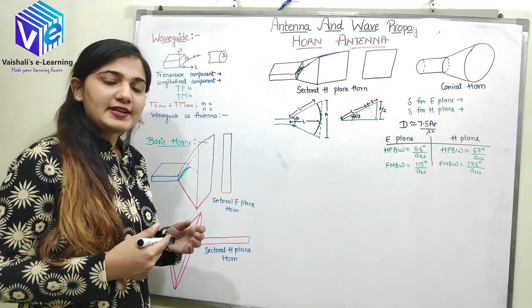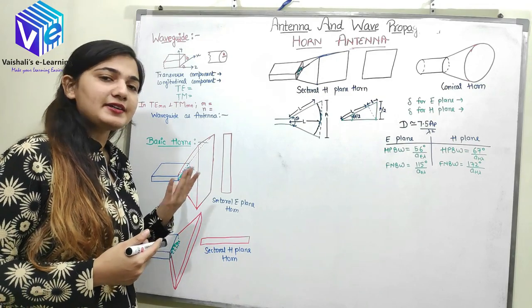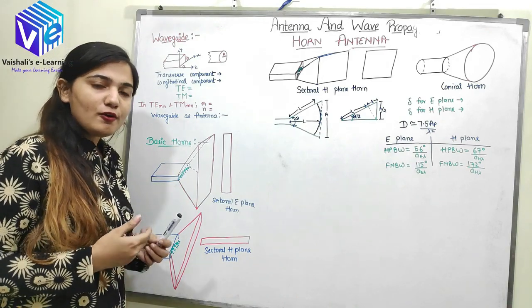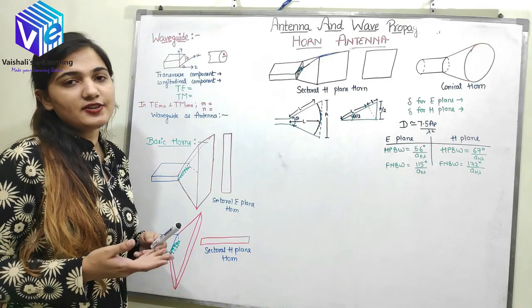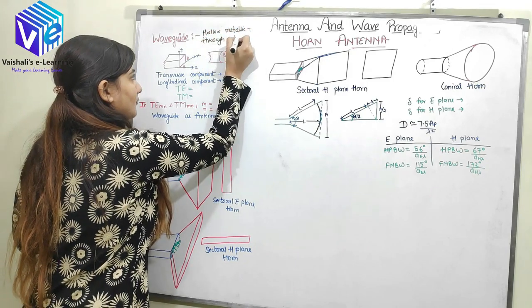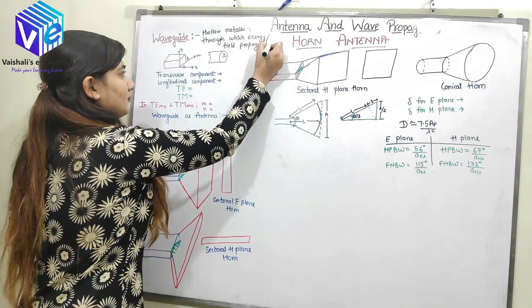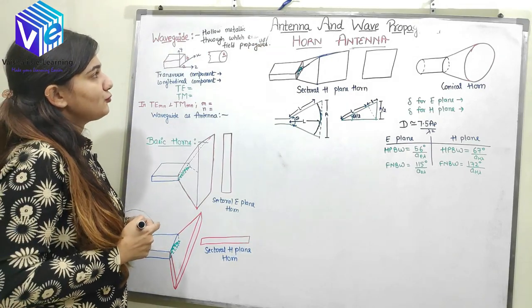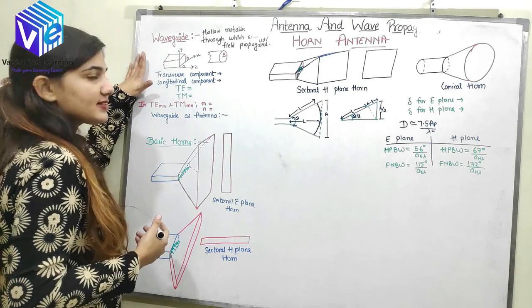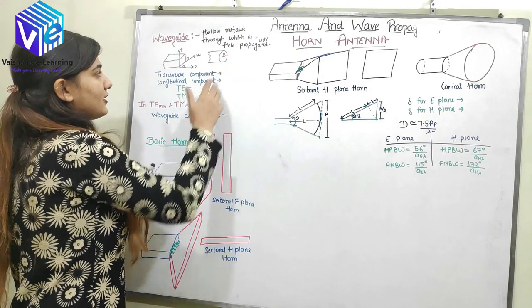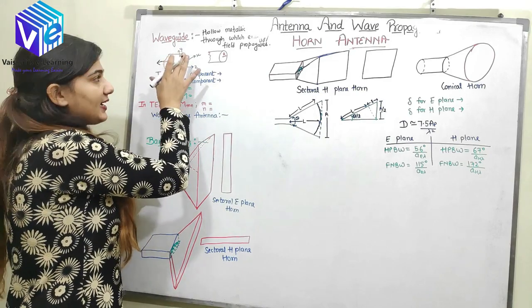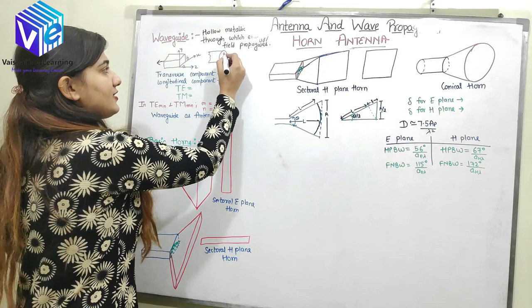Now we will discuss the waveguide in detail and then see how I can convert this waveguide into a horn antenna. A waveguide is a hollow metallic tube through which the electric field or the radiating energy propagates. We have two types of waveguide: first is rectangular waveguide and second is circular waveguide.